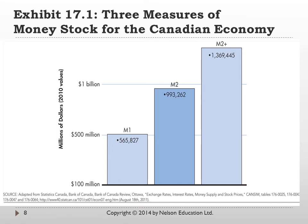M2 is a broader measure that includes everything in M1 but also includes personal savings accounts, other checking accounts, term deposits, and some business deposits that might need notice before being withdrawn. It was just under a billion dollars — roughly twice the M1 — floating around in the Canadian economy in 2010.